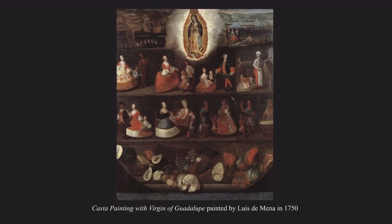Luis de Mena perfectly shows what Casta paintings are. The diversity shown in his painting is very apparent, and with the added aspects of the landscape, the Virgin of Guadalupe, and the products that were sold, it summarizes New Spain. The diversity is beautifully shown with the eight different sections and gives a unique perspective as to how the genre of art was portrayed. Unlike the other paintings we'll be viewing, this piece doesn't focus solely on one family but rather a group, giving a good overview of how racially diverse New Spain was.